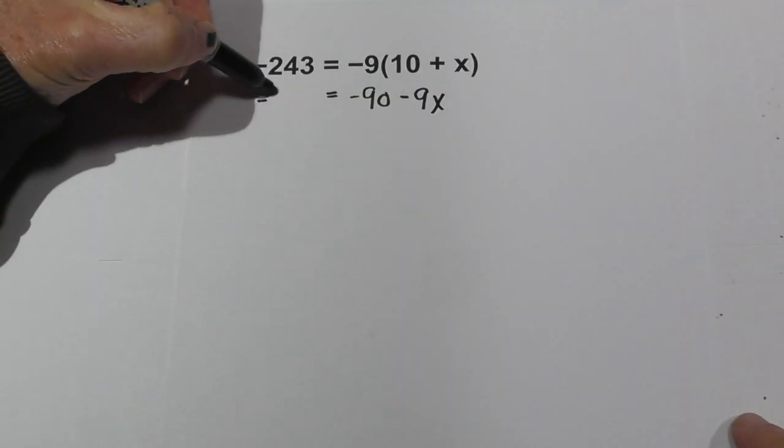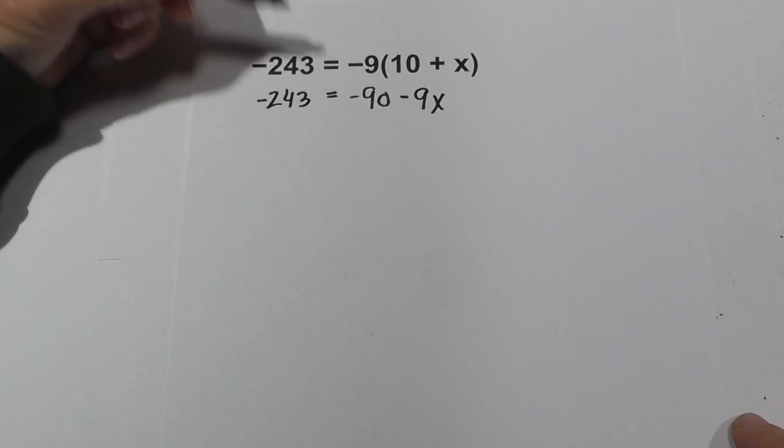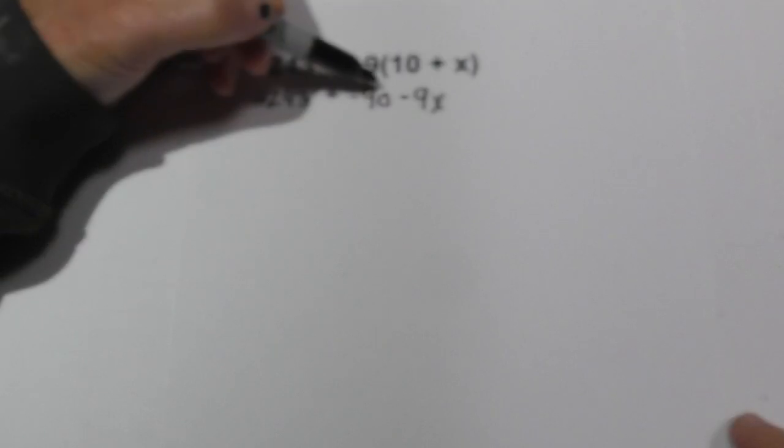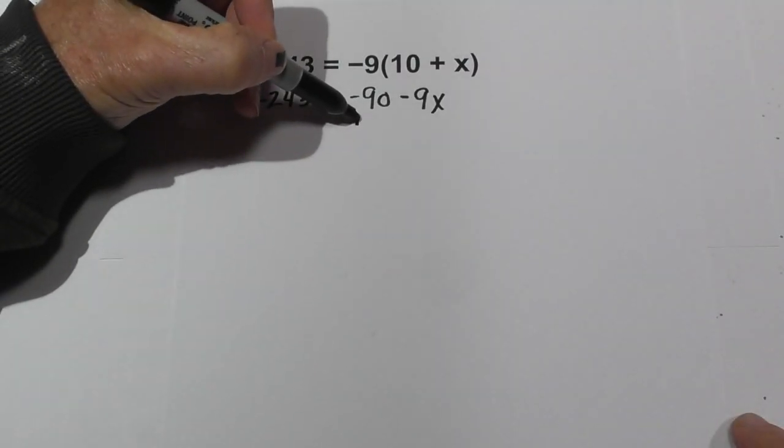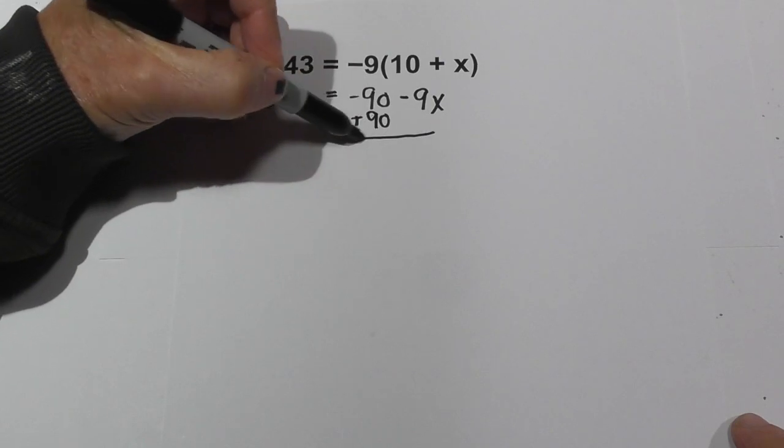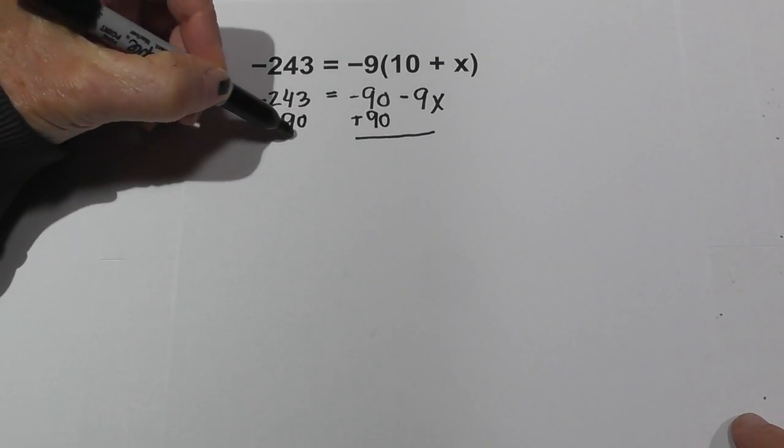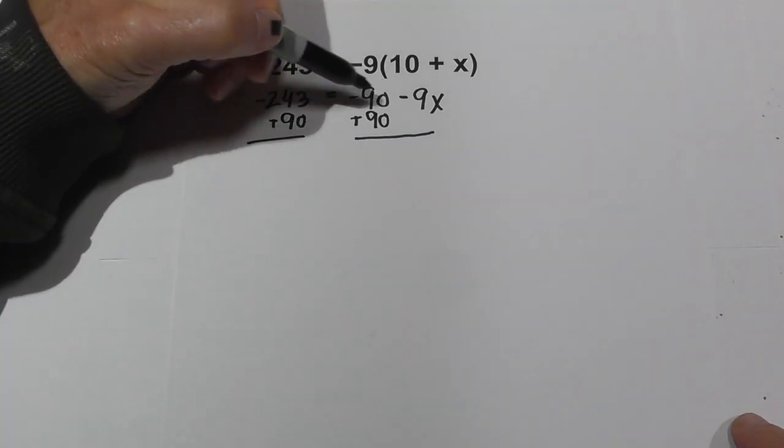9 times a positive x is a negative 9x. I'll bring down the negative 243. Now we need to isolate the x so we can get rid of this constant or number by completing a reverse operation of addition.